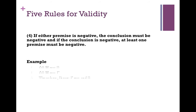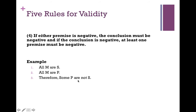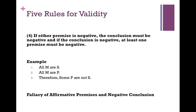Another version of this: 'all M are S, all M are P, therefore some P are not S.' Here we have two affirmative propositions leading to a negative conclusion. You can't say one times one equals negative one — it just doesn't work. This would be the fallacy of affirmative premises and a negative conclusion.